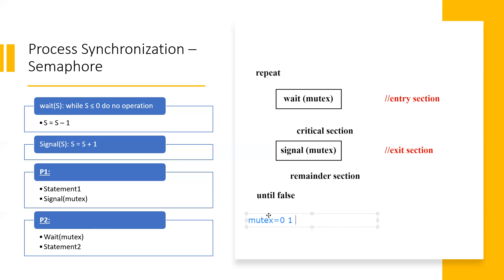Here we are going to discuss a reverse scenario. We say that if we want to run P2 first, then what is in P2? Wait — and the semaphore value is zero. Zero means that the critical section is already occupied. We can wait until and unless the critical section is free. So first, yes, the mutex value is zero.